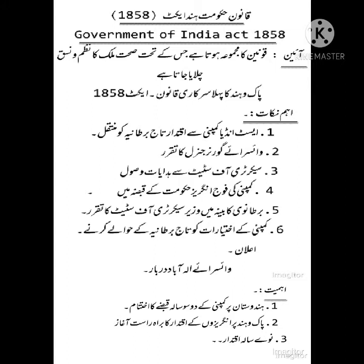باقاعدہ طور پر ہندوستان پر حکومت کرنے کے بعد انہوں نے اپنا آئین بنا کر ہندوستان بھیجا جسے تاریخ میں ایکٹ 1858 کے نام سے یاد کیا جاتا ہے۔ یہ آئین برطانوی پارلیمنٹ نے - یعنی برطانیہ کے قانون ساز ادارے نے - حکومت ہندوستان کے لیے بنایا تھا۔ اب اس کے اہم نقاط دیکھتے ہیں۔